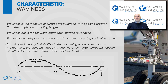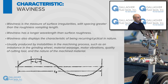The next characteristic is waviness, which is the measure of surface irregularities with spacing greater than the roughness sampling length. It also has a longer wavelength than surface roughness. Waviness is produced by instabilities in the manufacturing operation, such as an imbalance of the grinding wheel, material warpage, poor cutting tool quality, and motor vibrations.